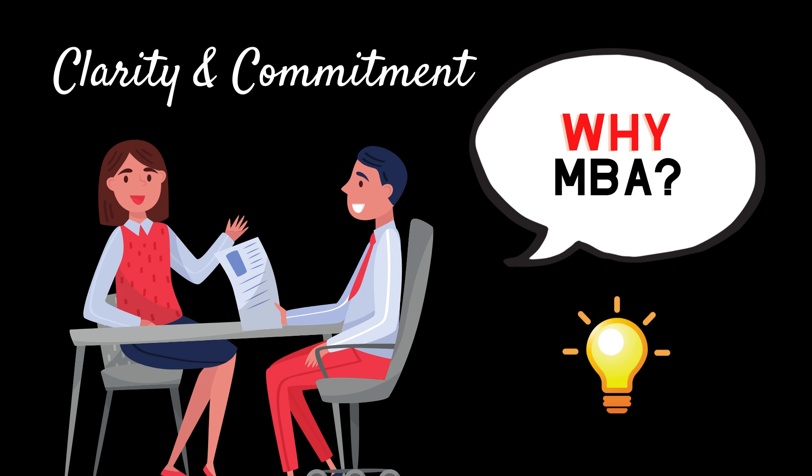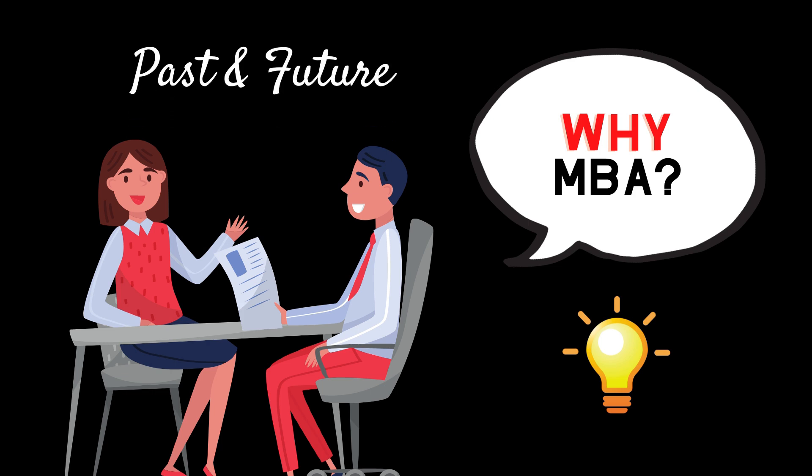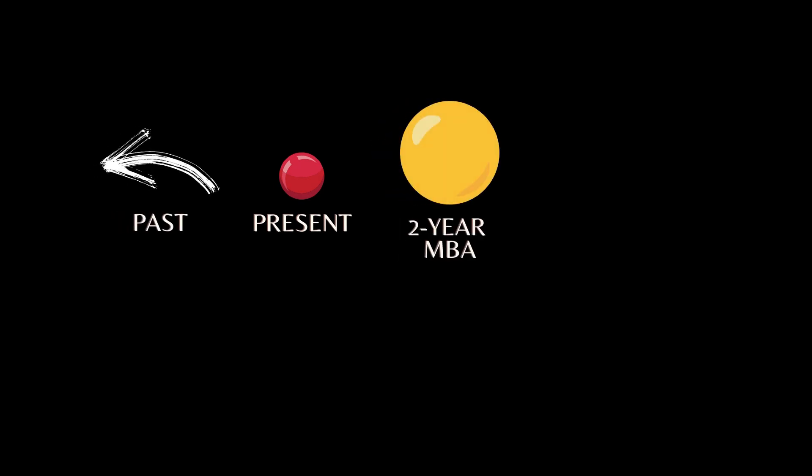So whenever you answer this question, you should have a lot of clarity about your past as well as your future, which is what we are going to discuss in this model. In this model, this is where you currently are. There's a certain past behind you. Then will come a two-year degree of MBA, after which there will be a future waiting for you.